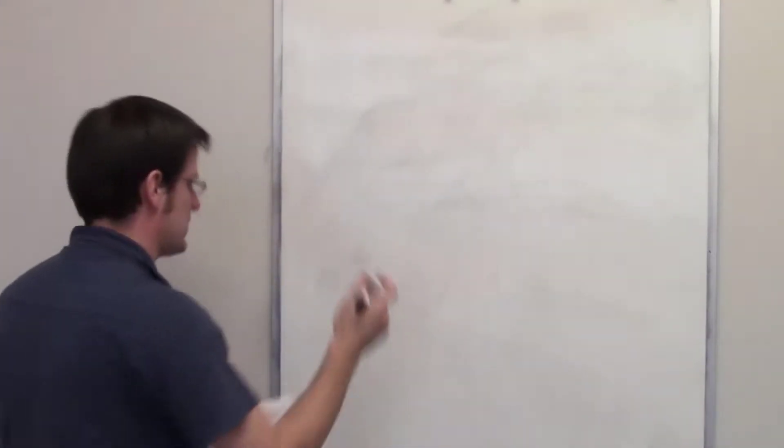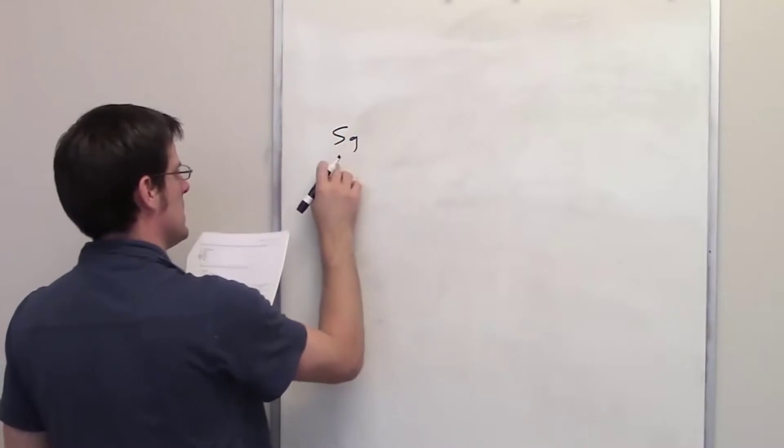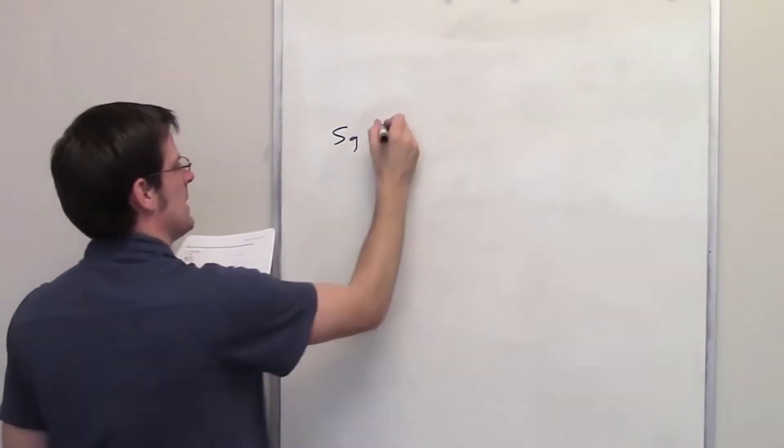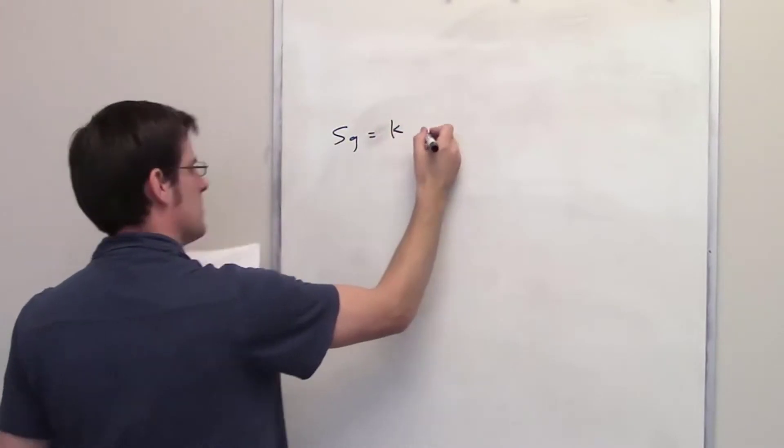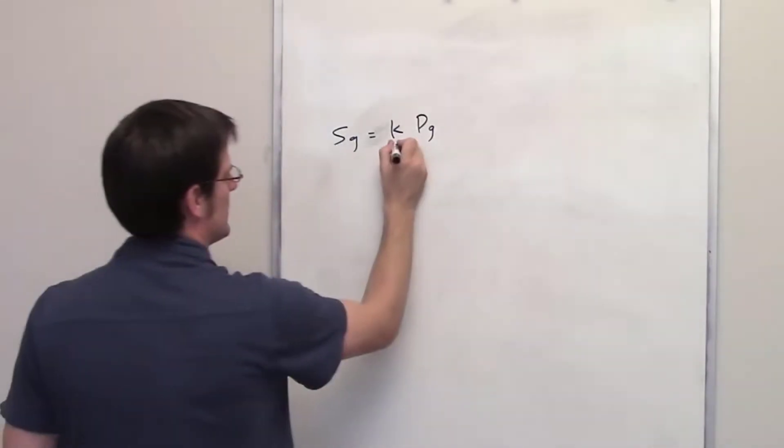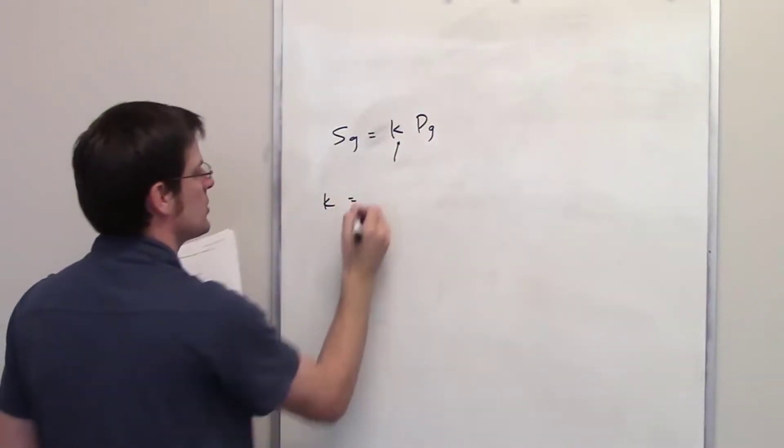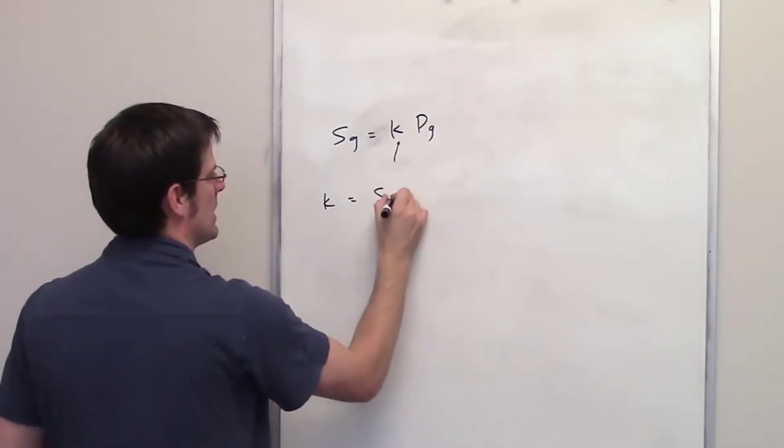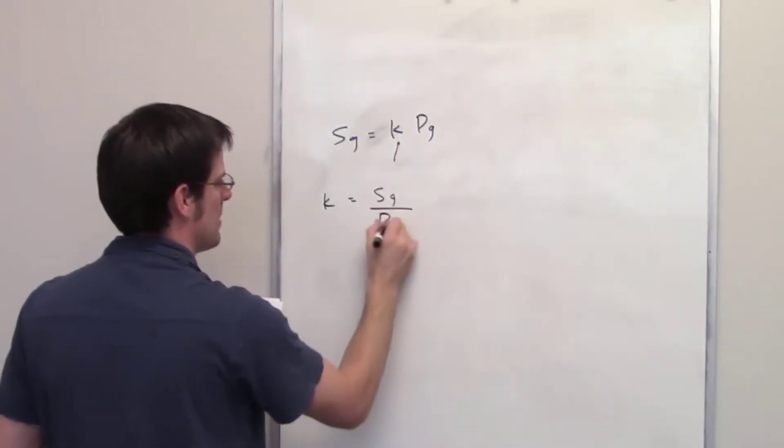This question also involves the same equation, the molarity or concentration being equal to the solubility constant multiplied by the partial pressure. In this equation, it's asking us to solve for k, the solubility constant, also known as Henry's constant. Algebraically, we can solve for k by noting that it is going to be equal to the solubility divided by the partial pressure.